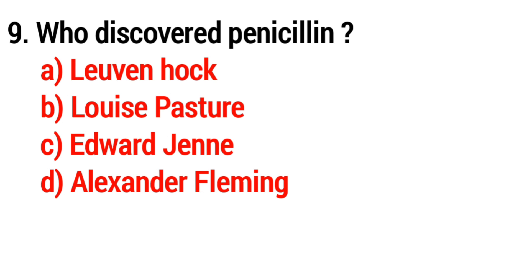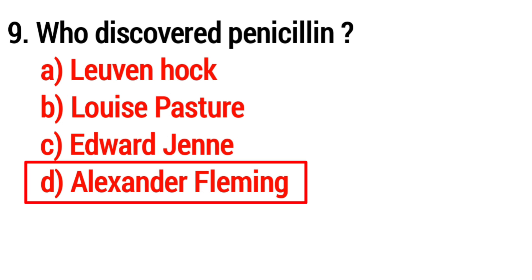Question 9. Who discovered penicillin? Option D: Alexander Fleming. The answer is Alexander Fleming.